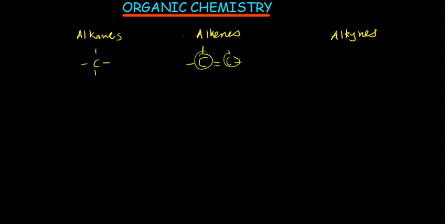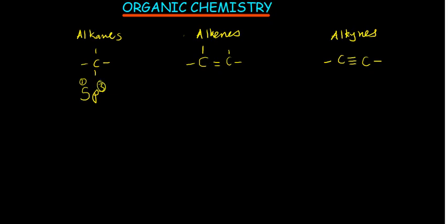For alkynes, there is at least a triple bond in the molecule. Since three electrons are already shared, each carbon in the triple bond only needs one other atom attached to it. A carbon bonded to four different things undergoes sp³ hybridization — one s and three p orbitals combine to give four hybrid orbitals where hydrogens can react.